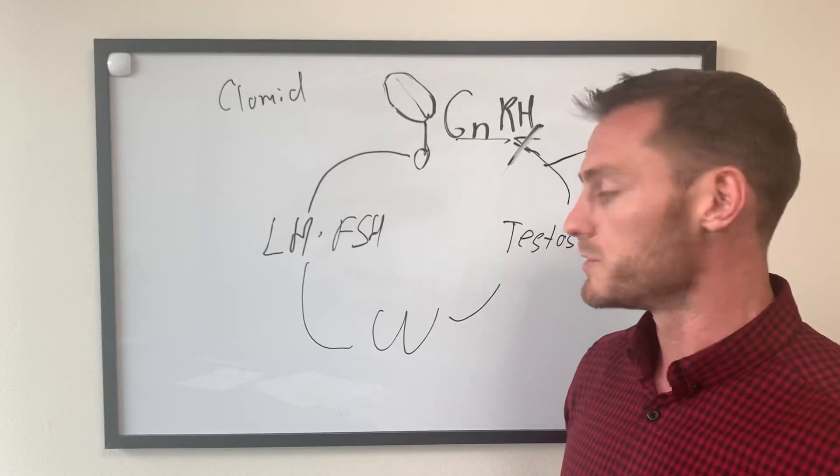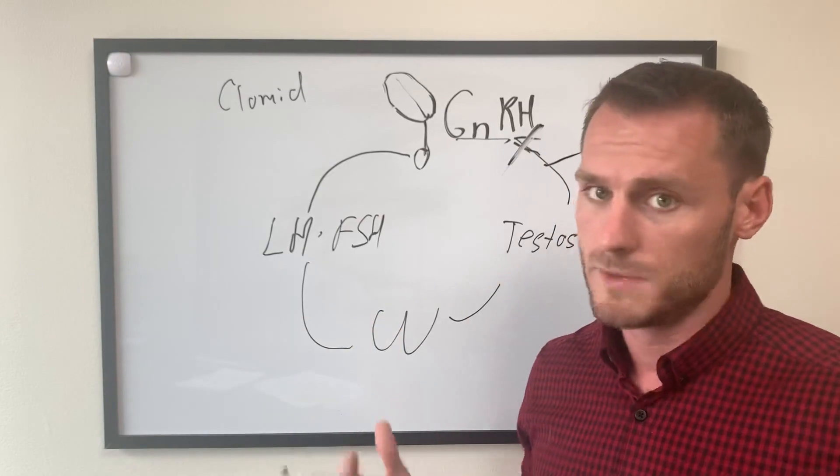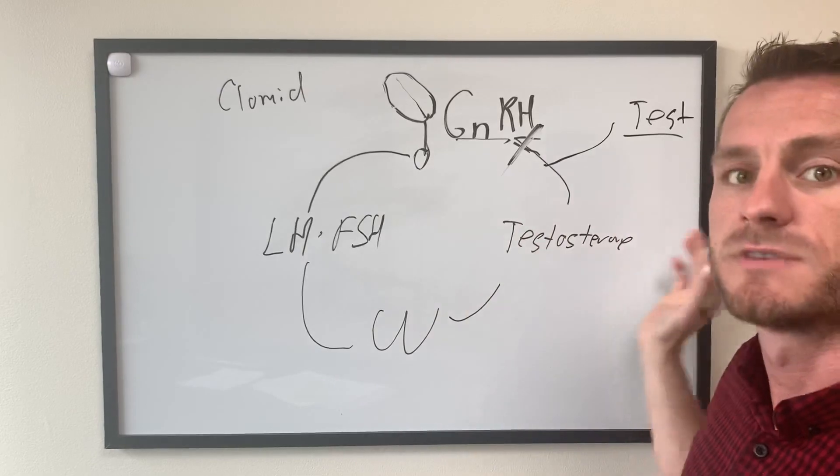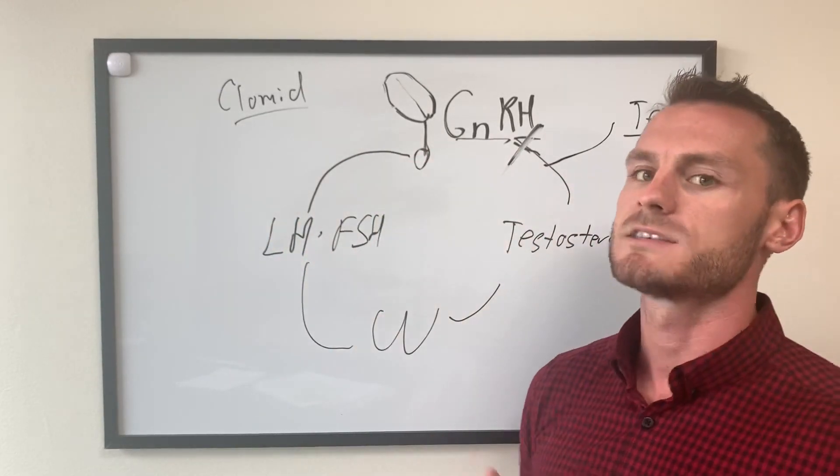Now if the body is unable to produce testosterone due to testicular damage or due to aging, the Clomid really won't help. So that's the difference between Clomid and testosterone. Testosterone exogenously gives the body testosterone. Clomid blocks the signal and has the body produce more.